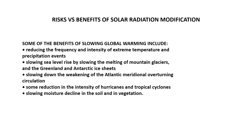Solar radiation modification by the injection of sulfur dioxide particles into the upper atmosphere very likely would slow the rate of global warming, and there certainly would be benefits from that. These benefits would include a reduction in the frequency and intensity of extreme temperature and precipitation events, slowing sea level rise by slowing the melting of glaciers and the Greenland and Antarctic ice sheets, and slowing the weakening of the Atlantic Meridional Overturning Circulation system. Other benefits would include some reduction in the intensity of hurricanes and tropical cyclones, and slowing declines in soil moisture and vegetation moisture, which would have positive impacts on agriculture and wildfires.